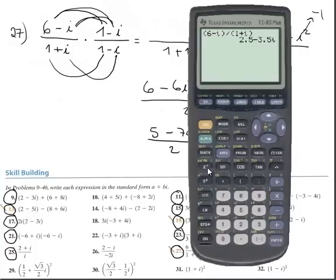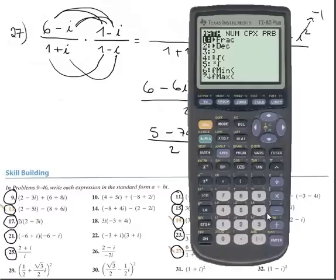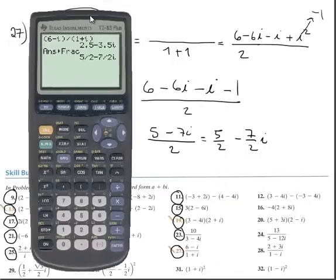I don't want fraction, I convert as a fraction. Fraction is 5 over 2, minus 7 over 2i, perfect.